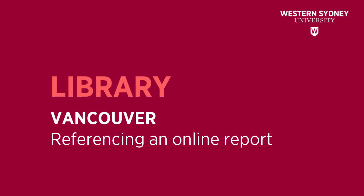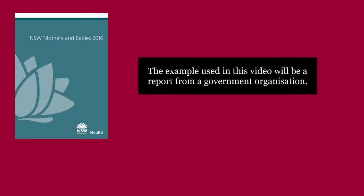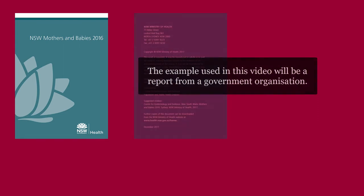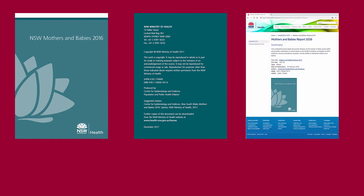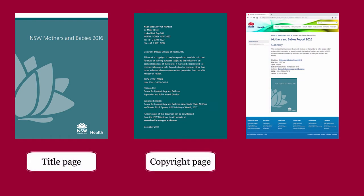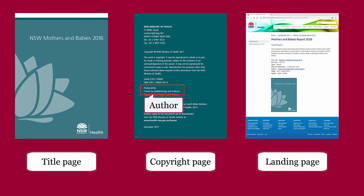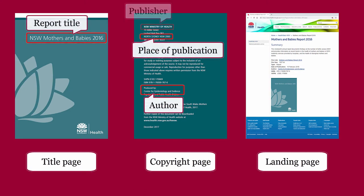This library video will show you how to reference an online report in the Vancouver style. The example used in this video will be a report from a government organization. The details for citing an online report are usually found on the report's title page, copyright page, and report landing page. Important details include author, report title, place of publication, publisher, year, and URL.